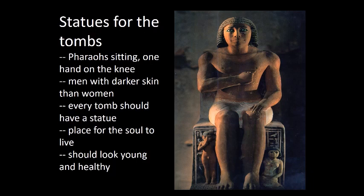Aside from the pyramids, one requirement for the tombs would be statues. These statues would depict the Pharaoh sitting with one hand on his knee, with men having darker skin than women. It was a requirement that every tomb should have a statue, because of their belief that in case the mummified body would be destroyed, there is a place for the soul to transfer and live — which is the statue. That's why it should be depicted as young and healthy looking.